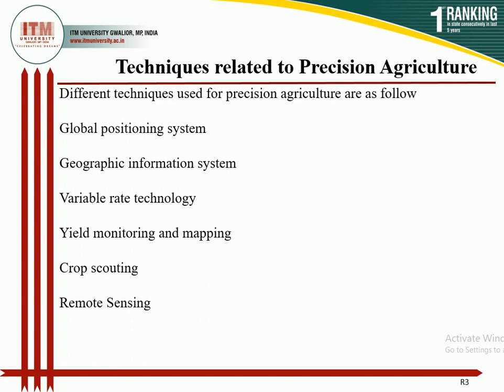The key techniques used in precision farming are: Global Positioning System (GPS), Geographic Information System (GIS), variable rate technology, yield monitoring and mapping, crop scouting, and remote sensing. There are many other technologies also used in precision farming like robots, drones, satellite imagery, smartphone applications, and machine learning.